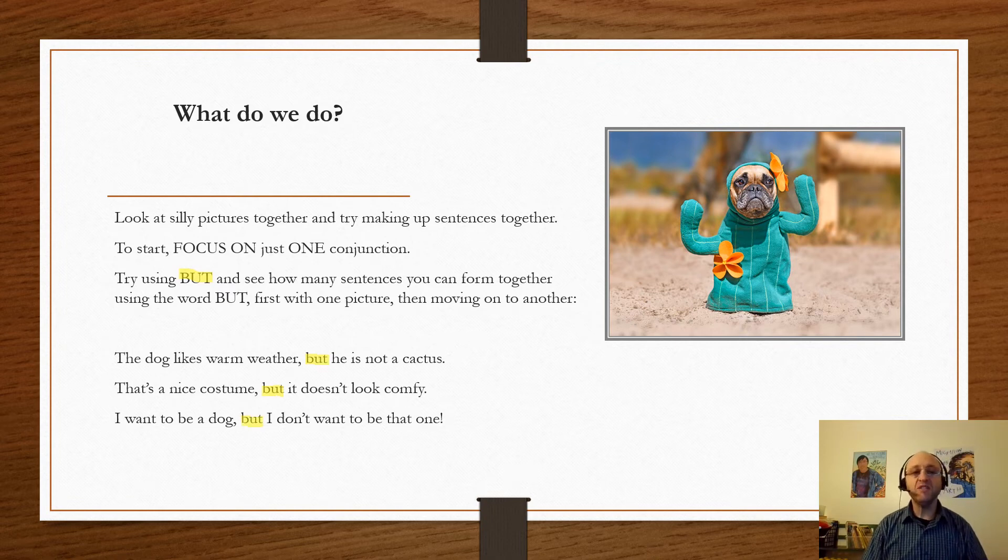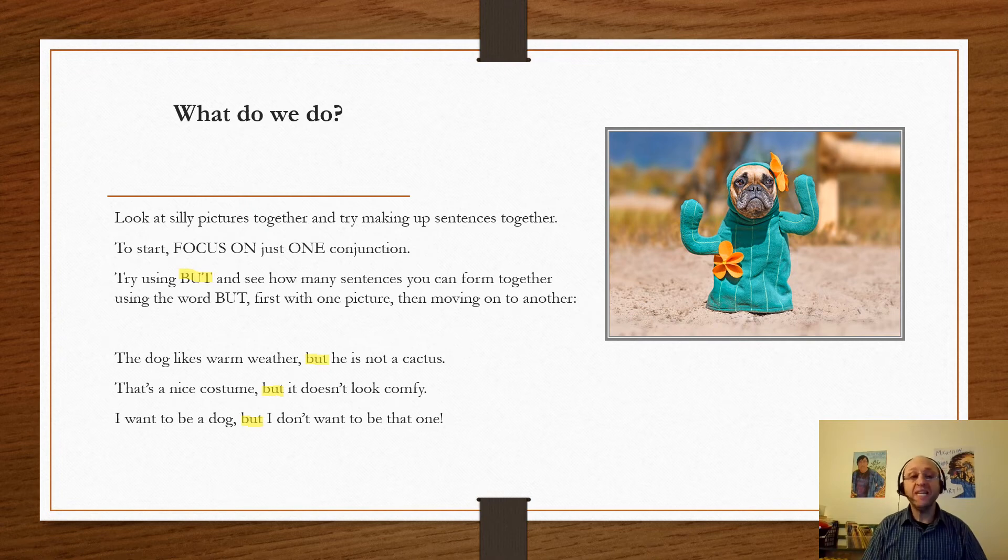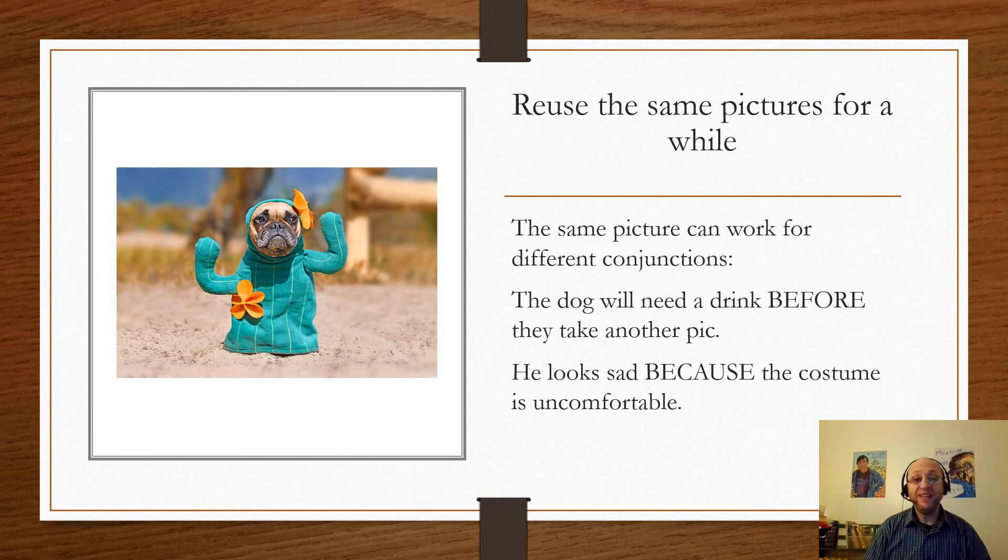Some examples here: the dog likes warm weather but he's not a cactus. That's a nice costume but it doesn't look too comfy. I want to be a dog but I don't want to be that one.